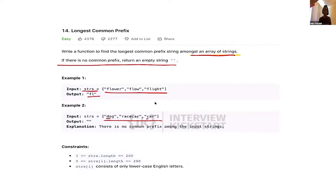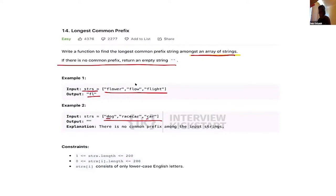Pankaj suggests a brute force approach: scan each string and store prefixes in a hash map with counts. For example, scan 'f' as one character, 'fl', 'flo', 'flow' — incrementing counts. When you start scanning the second string, you build up the counts, and if any prefix count equals the total number of words, that's the answer.